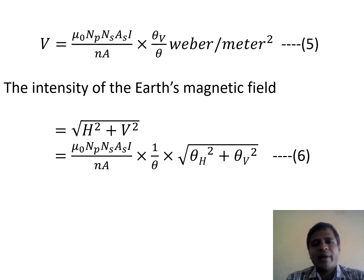The total intensity of Earth's magnetic field is calculated by the expression under root of (BH squared plus BV squared). Substituting the values of the horizontal and vertical components, we have: mu-naught NP NS AS I upon (N times A times theta) times under root of (theta H squared plus theta V squared). Let this be equation 6, which gives the total intensity of Earth's magnetic field.